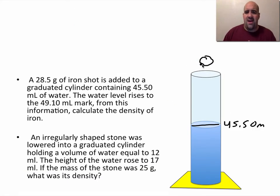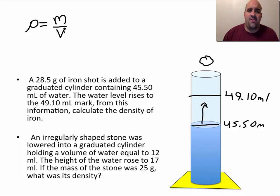When you drop the iron in, the water level rises up to 49.10 milliliters. And from this information they ask us to calculate the density of iron. Well hopefully we realize the density of any object equals its mass divided by its volume, and that's the Greek letter rho, the symbol for density. The mass is relatively straightforward, they tell us that right in the beginning. They say it is a 28.5 gram iron shot, and gram is a measure of mass. So we have 28.5 grams.